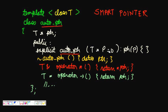In the constructor we take a pointer argument p (defaulting to null if nothing is passed), and assign ptr = p. So when you construct the AutoPointer you pass in the raw pointer and it gets stored as the internal ptr. In the destructor we simply call delete ptr — whatever memory was assigned to it is freed.